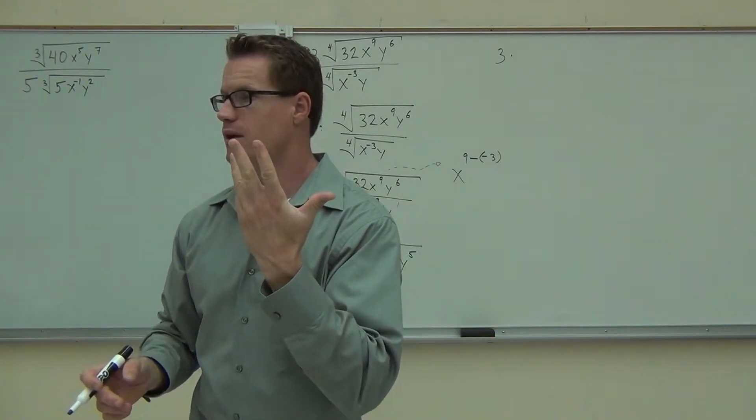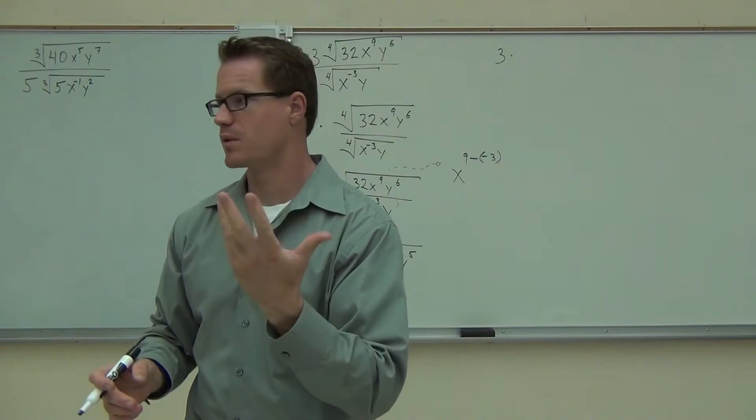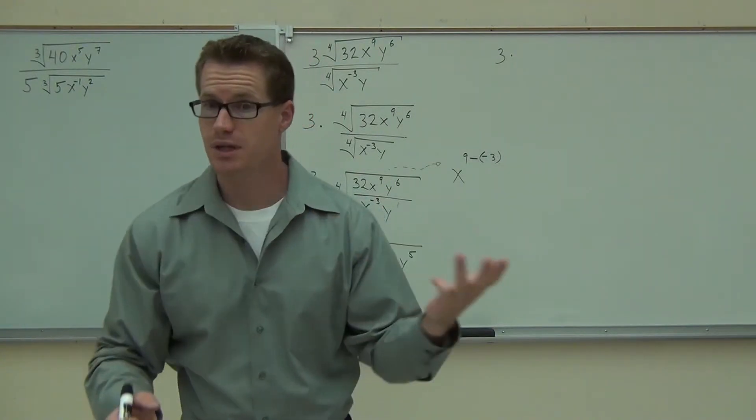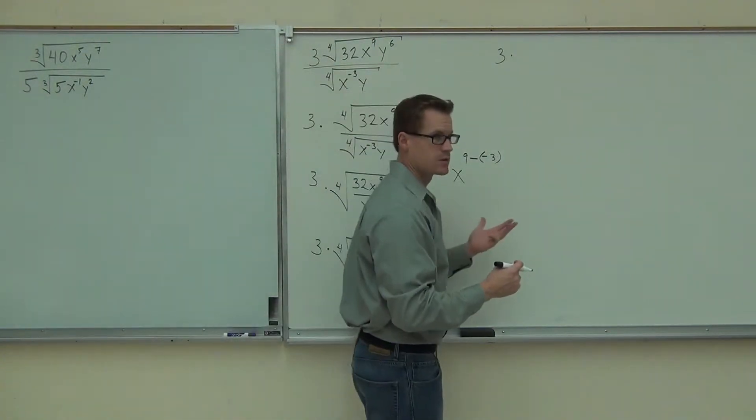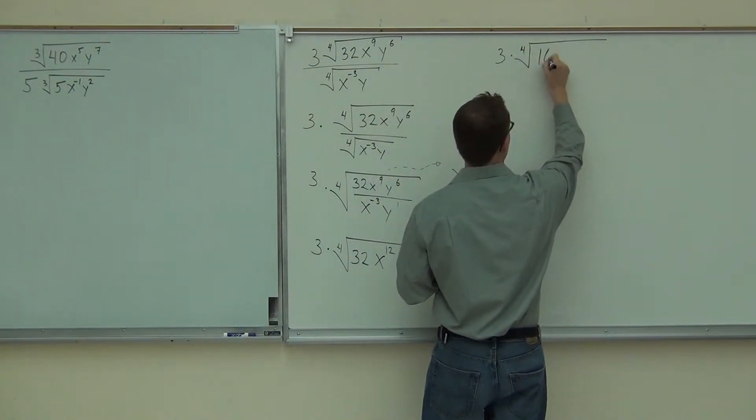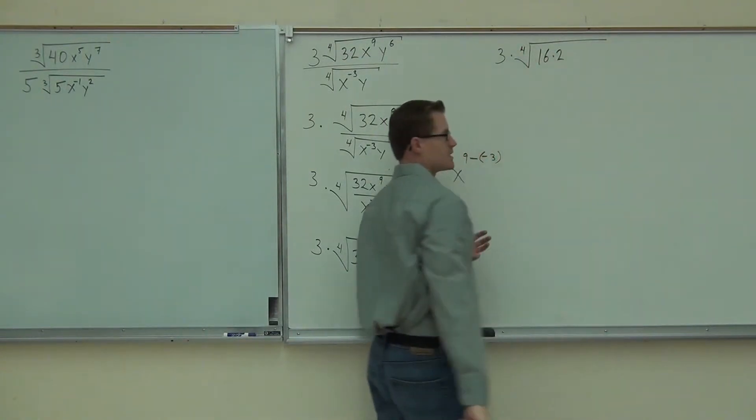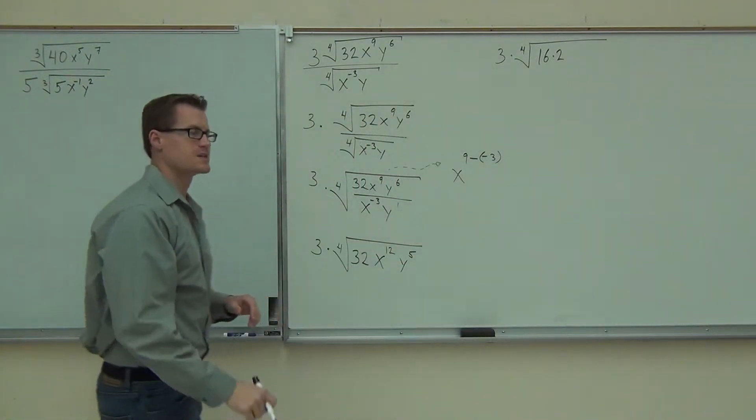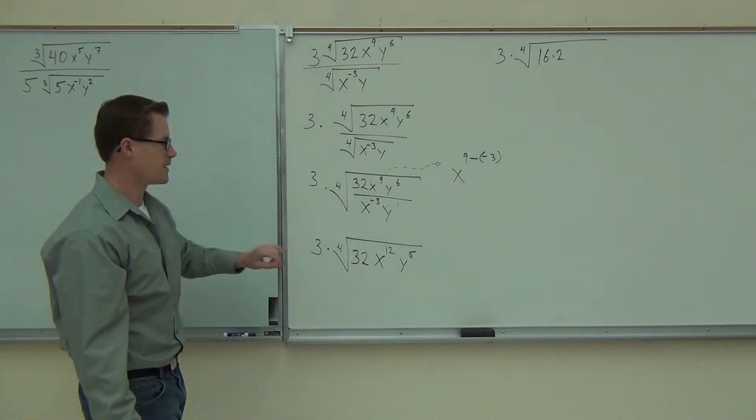That's 2 to the 4th. So unless that goes into it, we're not going to be able to simplify this. 16 fortunately does go into 32. How many times? Two times. So 16 is the perfect fourth power we were looking for. 16 times 2 gives us 32. So we're going to be able to split up our 32 like that.